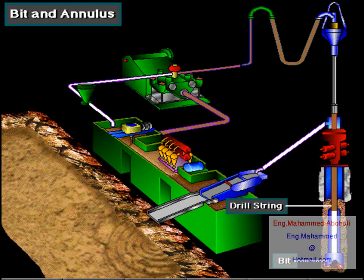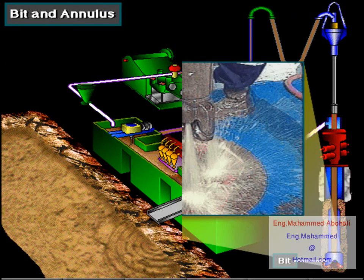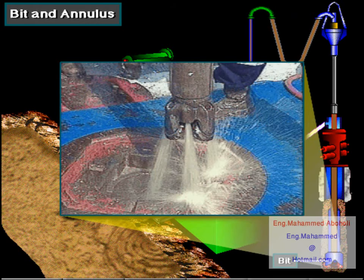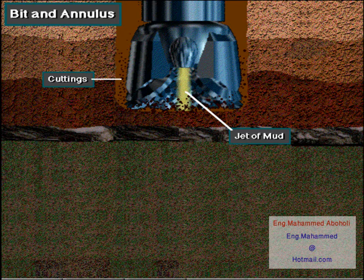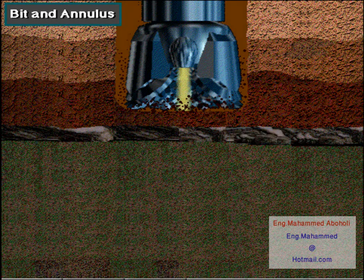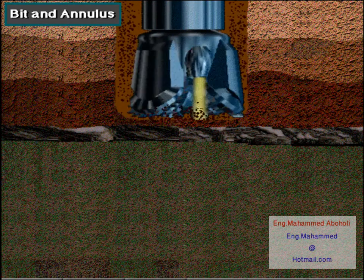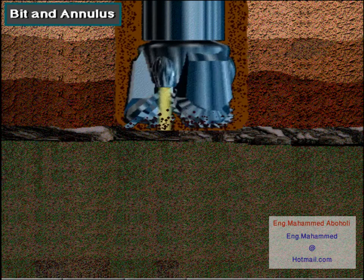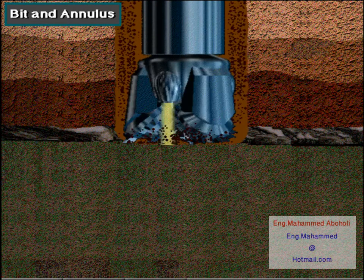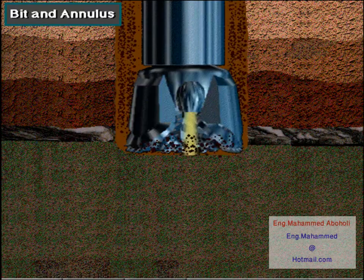The pump moves the mud down the drill string to the bit. At the bit, the mud jets out of the openings or nozzles in the bit. The jets of mud move cuttings away from the bit. Mud then continues up the annulus, carrying the cuttings with it.